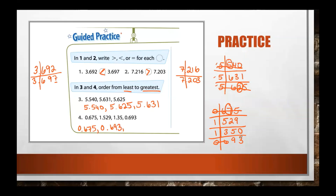Cross that one out. Now we look at the two remaining numbers. We have a one and a one — the same — so we move over and have a five and a three. Out of five and three, which is the smaller number? Three. So our next number is one and thirty-five hundredths, and that leaves our last, greatest number: one and five hundred twenty-nine thousandths.